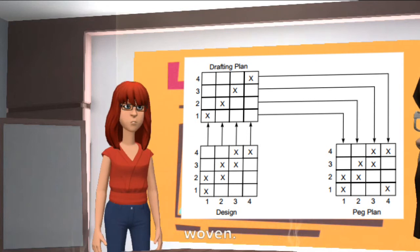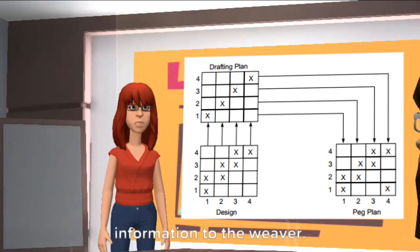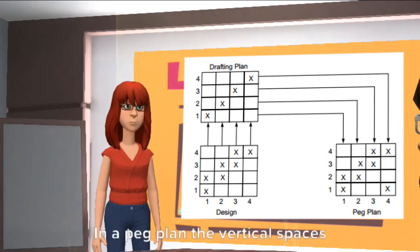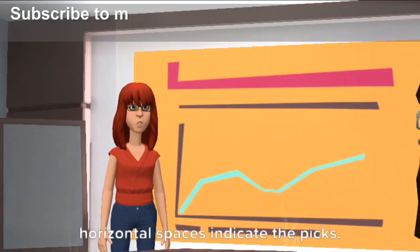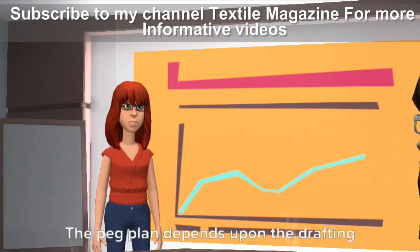The peg or lifting plan provides useful information to the weaver. It denotes the order of lifting of heald shafts. In a peg plan, the vertical spaces indicate the heald shafts and the horizontal spaces indicate the picks. The peg plan depends upon the drafting plan.